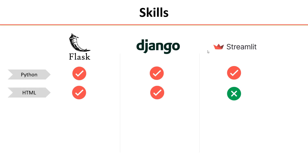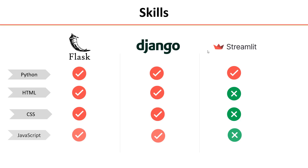We require knowledge of HTML for Flask and Django, whereas for Streamlit it is not required to learn HTML. Similarly, for styling our front-end web app, we require knowledge of CSS for Flask and Django, but Streamlit doesn't require that. We also require knowledge of JavaScript depending upon the application for Flask and Django, whereas in Streamlit we don't require any knowledge of JavaScript. Only Python is enough to build the application in Streamlit.